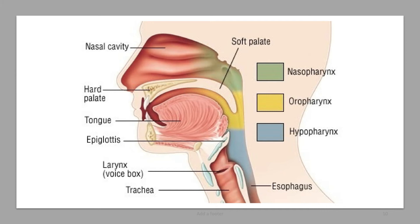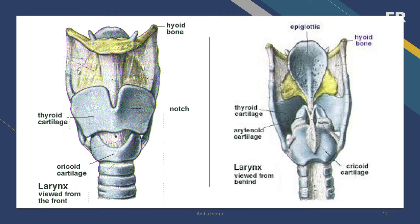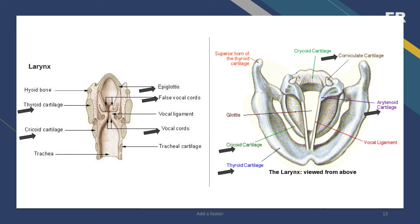The oropharynx, the middle portion, contains the palatine and lingual tonsils. The next part is the larynx, or voice box, which is a hollow organ that allows you to talk and make sound when air moves in and out. Your larynx contains nine pieces of laryngeal cartilage that fit together: three single pieces, which are the thyroid, cricoid, and epiglottis, and three pairs — the cuneiform, corniculate, and arytenoid cartilages. The larynx also has vestibular folds, or false vocal cords, and vocal folds, or true vocal cords.